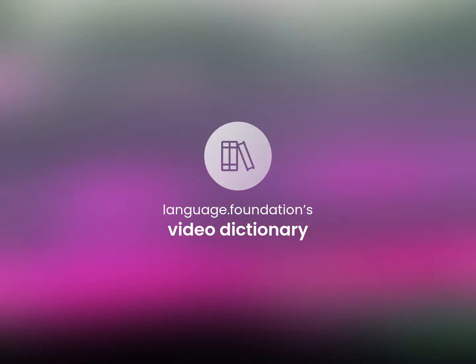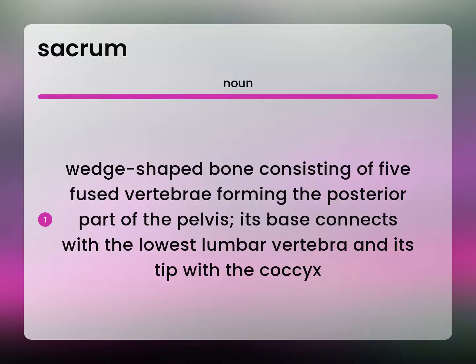Language.Foundation's Video Dictionary, helping you achieve understanding. Wedge-shaped bone consisting of five fused vertebrae forming the posterior part of the pelvis. Its base connects with the lowest lumbar vertebra and its tip with the coccyx.